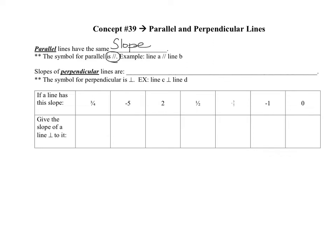For example, I could say line A is parallel to line B, and that is a math sentence. Slopes of perpendicular lines — a reminder that perpendicular lines are two lines that form a right angle, so they intersect and form a 90-degree angle. The X and Y axes are perpendicular.